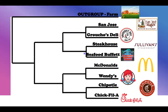Our tree is a diagram showing the differences and similarities between our OTUs — operational taxonomic units — which in our case are our restaurants. Instead of our OTUs being compared by their DNA sequence like normal organisms would, we're going to compare our restaurants by different characteristics.